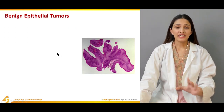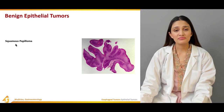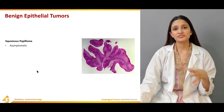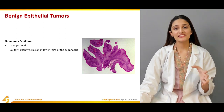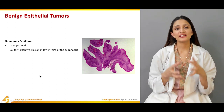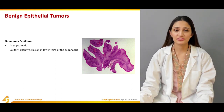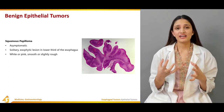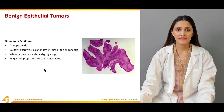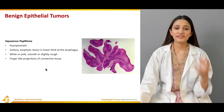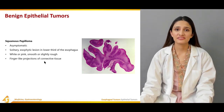Moving to benign epithelial tumors, the most common is squamous papilloma. Patients are usually asymptomatic and do not present with dysphagia or odynophagia. This tumor is usually solitary with an exophytic lesion, mostly present in the lower third of the esophagus. It tends to have a white or pinkish color with a smooth to slightly rough consistency. Histologically, it has finger-like projections of connective tissue with an increased number of squamous cells.